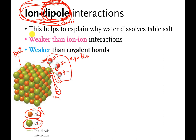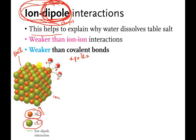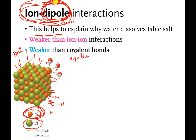This helps explain why water dissolves table salt. If you throw enough water molecules onto table salt, the partial positives of the hydrogens on the water can interact with the negative charge on the chlorine. With enough water molecules, they can pull the chlorines off the positively charged sodiums. Similarly, the partial negative charge on the oxygens can pull away the positive sodiums. If you throw enough water on there, all the sodiums and chlorines go flying off and start interacting with the water instead of each other. Those are called ion-dipole interactions.